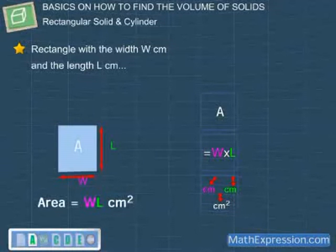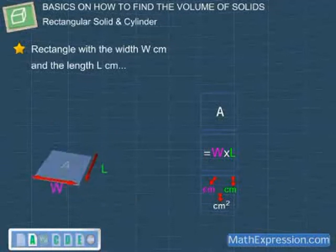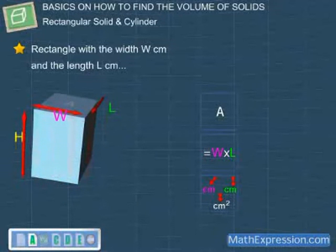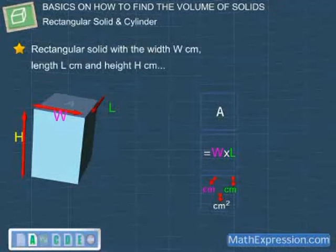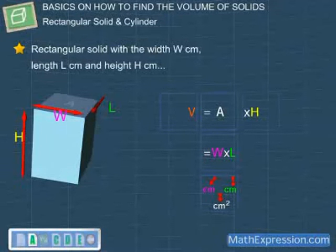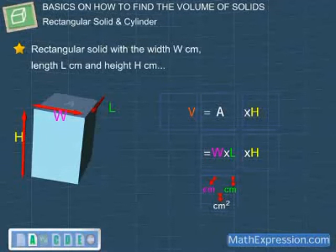Next, let's change this rectangle into a rectangular solid. This rectangular solid now has a width of W cm, a length of L cm, and a height of H cm. Notice that this solid is occupying a certain amount of space, and the amount of space occupied is called volume, V. To find the volume of this rectangular solid, we just need to multiply the area, A, with the height, H. Hence, by multiplying W, L, and H, we get the volume of this rectangular solid as W × L × H.